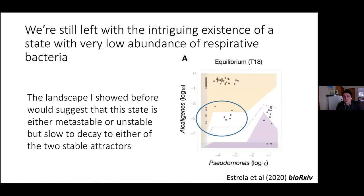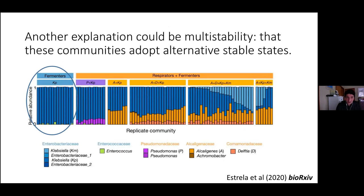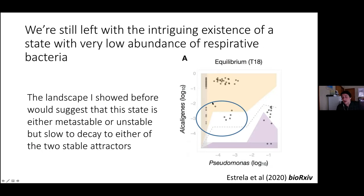Zooming in on the state where neither Pseudomonas nor Alcaligenes is above one percent, our hypothesis is that these communities are stuck — either in another metastable state we're not resolving in the bottom-up community, or more likely stuck in the very slow region of the dynamical landscape where it just takes a long time for either Alcaligenes or Pseudomonas to invade. Both are present at decent abundances detectable by sequencing even after 18 transfers — they just never quite jumped over the threshold.